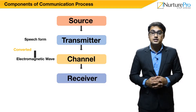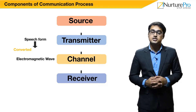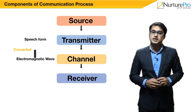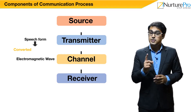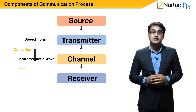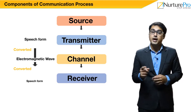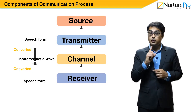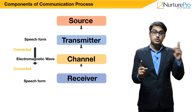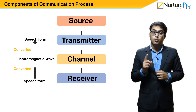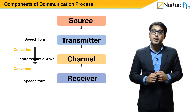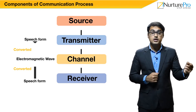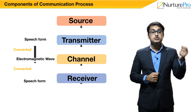Receiver: At this point, the message is extracted from the received signals. For example, a speech signal at the transmitter is converted into electromagnetic waves to travel over the channel from one user to the other. Once the electromagnetic waves are received properly, the receiver converts them back to speech form.